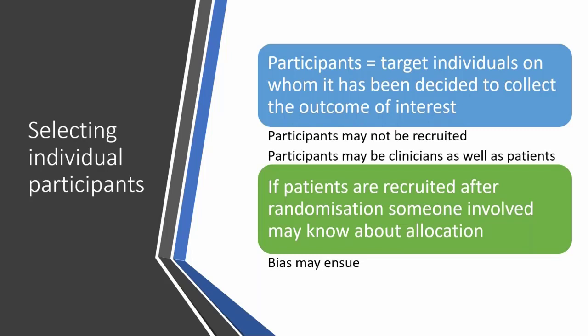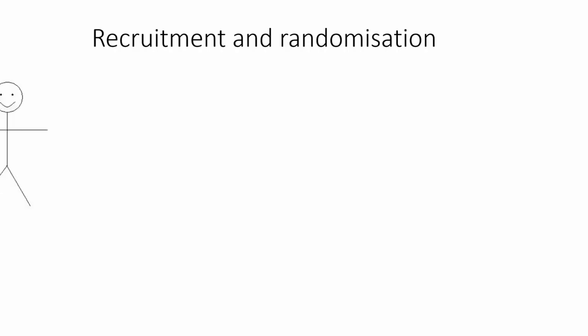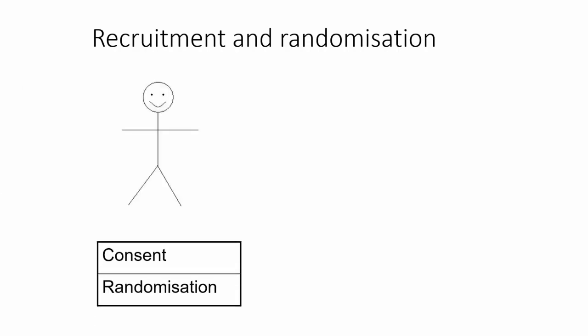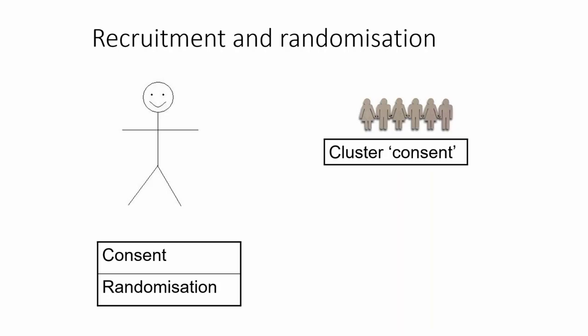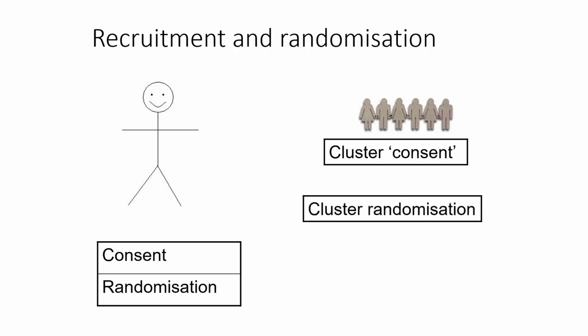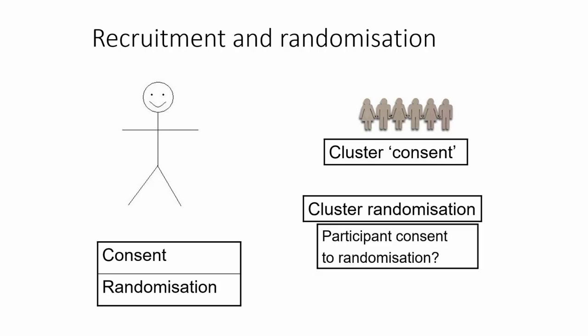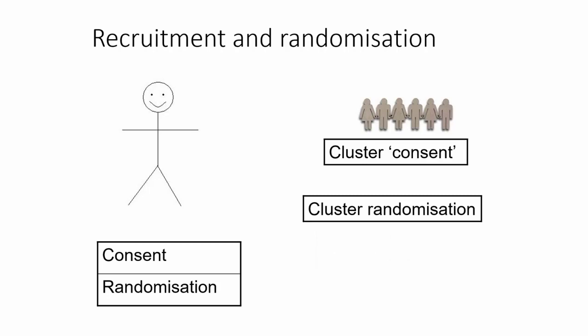The second key issue is that sometimes participants are recruited into cluster randomised trials after clusters have been randomised. This can happen, for example, when participants are recruited as a result of an acute event or a visit to a health organisation. If it does happen, bias may ensue. In an individually randomised trial, the recruitment and randomisation all happen for an individual as a seamless process. But in a cluster randomised trial, we recruit the cluster and then at some point randomise the cluster. Participants don't get an opportunity to consent to randomisation — that consent is done at the cluster level.